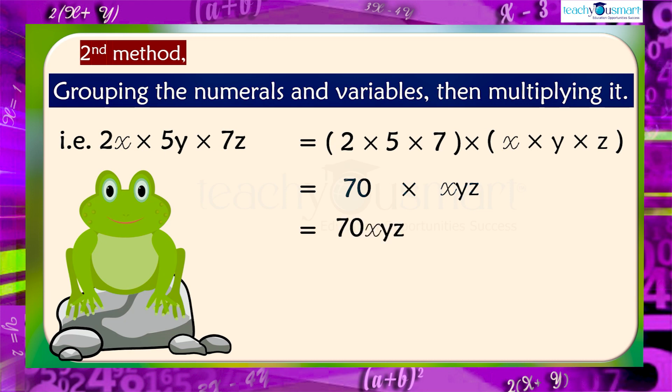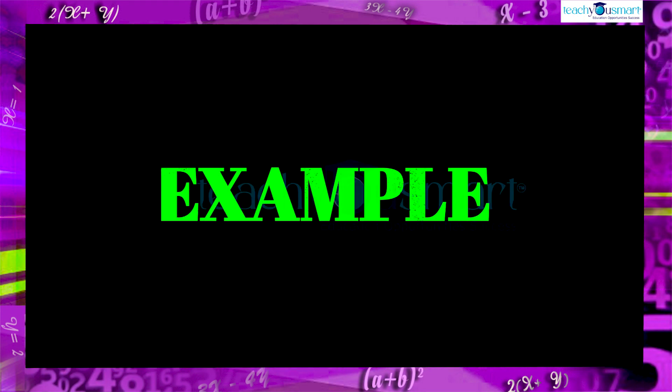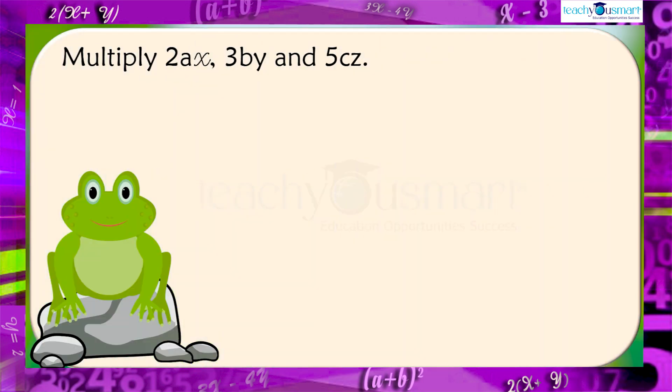From these, we understood that we can multiply 3 or more monomials in two different ways. Let's do another example. Multiply 2AX, 3BY and 5CZ.